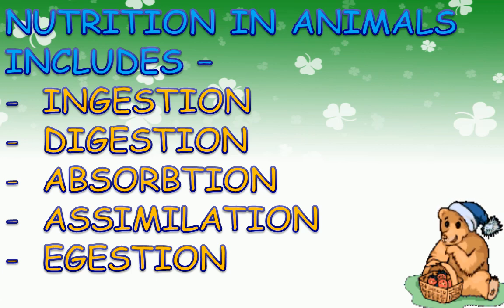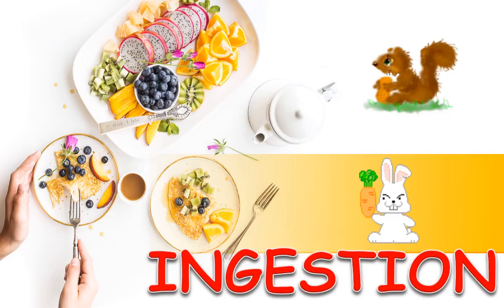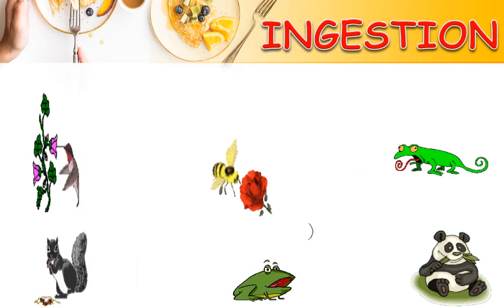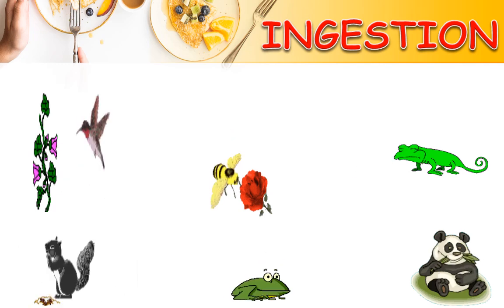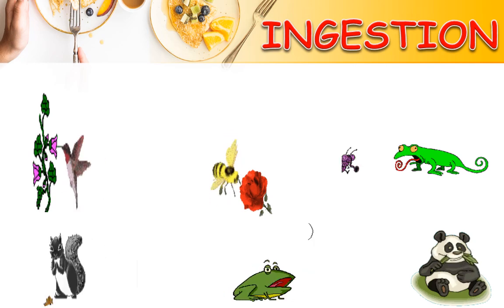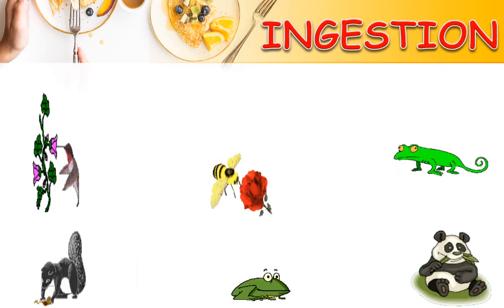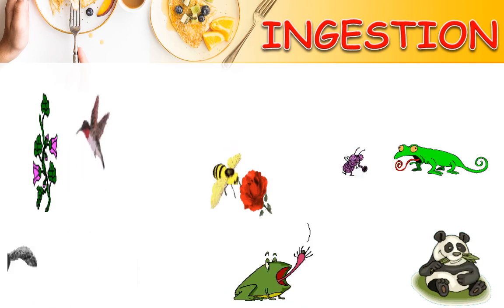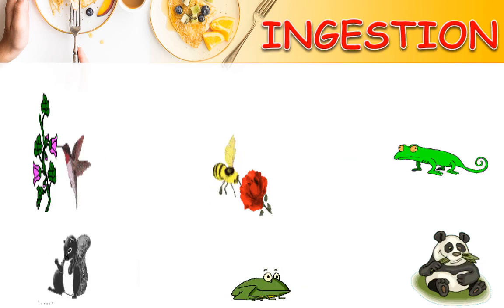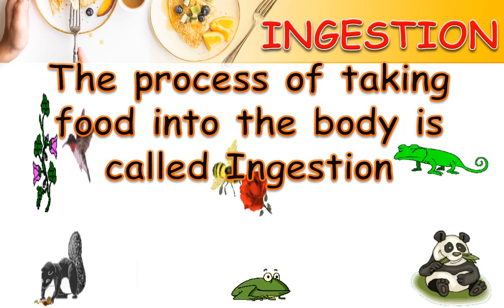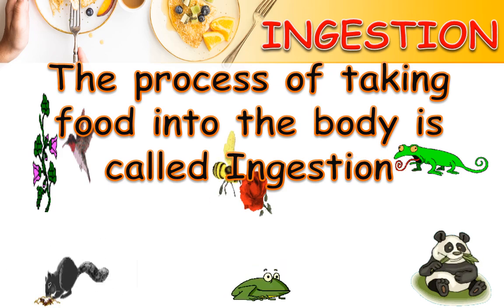We will understand these terms one by one. The first step is ingestion. The mode of taking food into the body varies in different organisms. Bees and hummingbirds suck the nectar of plants. Infants of humans and many other animals feed on mother's milk. Snakes like the python swallow the animals they prey on. Some aquatic animals filter tiny particles floating nearby and feed upon them. The process of taking food into the body is called ingestion.